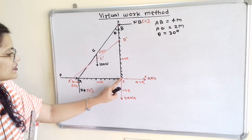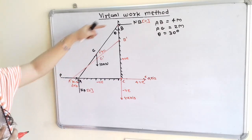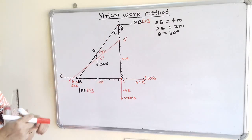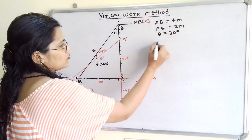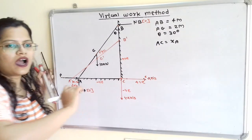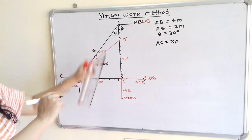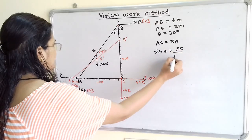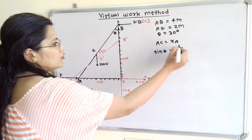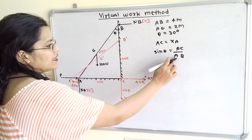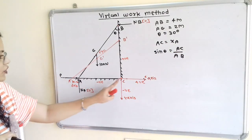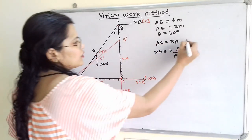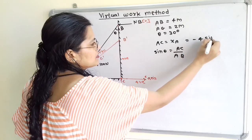To find the position of point A, we consider triangle A-B-C. In this triangle, A-C equals X_A. Writing sin theta equals A-C divided by A-B, and A-B is 4 meters, we get A-C = X_A = 4 sin theta. However, this distance is towards the left-hand side, so we apply a negative sign: X_A = -4 sin theta.